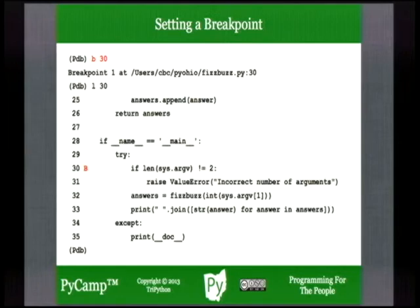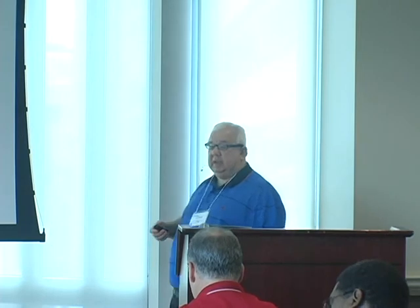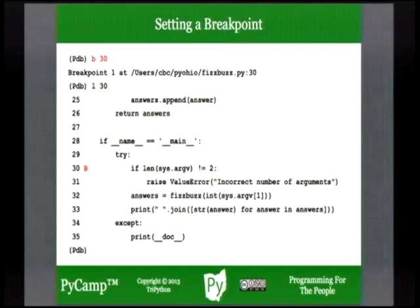A breakpoint means instead of single-stepping through the program, run through all the steps it takes to get to that point and then stop at the debugger prompt. Setting a breakpoint doesn't do it immediately — you're setting it for later use. If you list the statements around line 30, you will see the debugger listing shows a 'B' in front of lines with breakpoints. You can have more than one, numbered in the order you set them — this is breakpoint one.